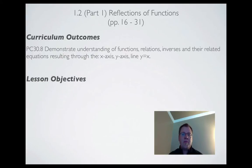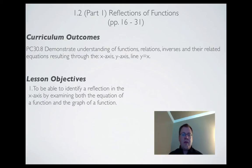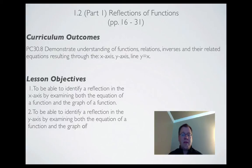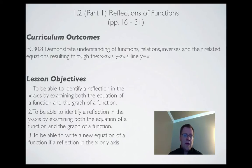Our curriculum outcome is 30.8, which is to demonstrate understanding of functions, relations and inverses, and the related equations resulting through the x-axis, y-axis, and the line y equals x. Specifically, by the end of this lesson you need to be able to: identify a reflection in the x-axis by examining both the equation and graph of a function; identify a reflection in the y-axis the same way; and write a new equation if a reflection in the x or y-axis has occurred.